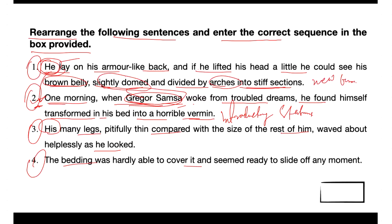So two and one make a pair. Now moving to sentence three and sentence four: sentence four follows sentence one, as it elaborates on the inadequacy of Gregor's bedding to cover his transformed body — 'seemed ready to slide off any moment.' This sentence provides further context about Gregor's situation and contributes to the overall description of his surroundings.